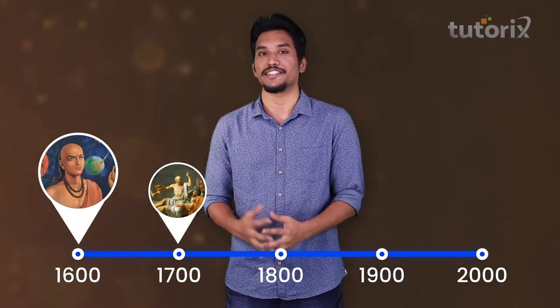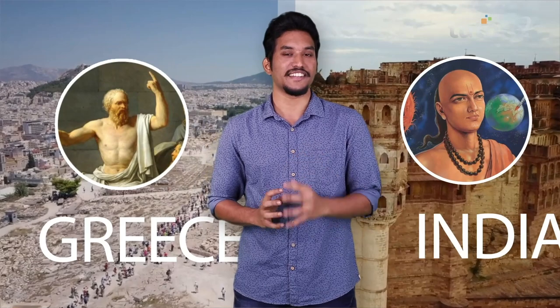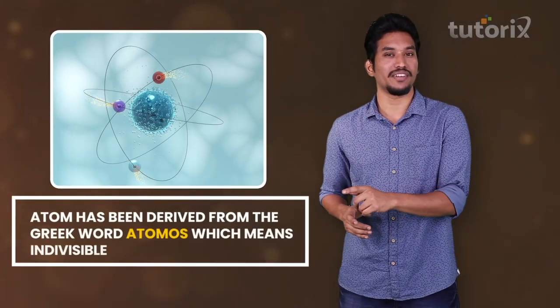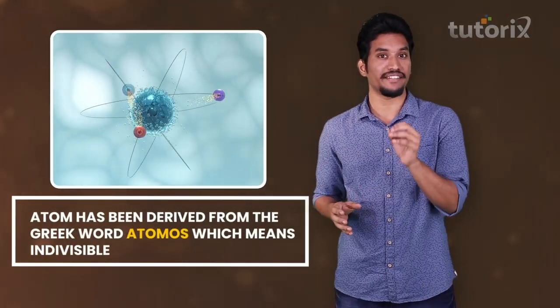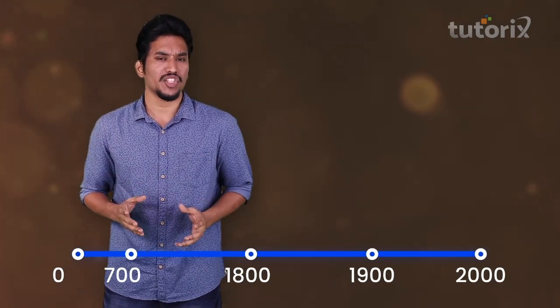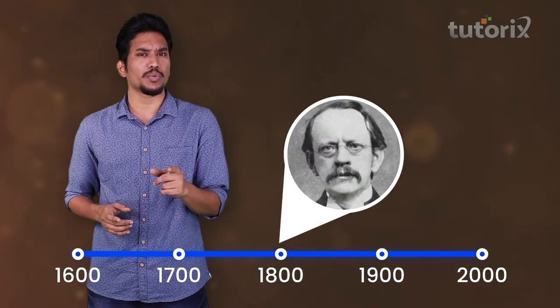Over history, the atomic theory originated as a philosophical concept in ancient India and Greece. The word 'atom' has been derived from the Greek word 'atomos,' which means indivisible. It took until the late 18th century for science to provide concrete evidence for the existence of an atom.